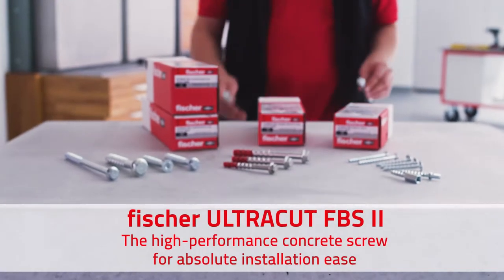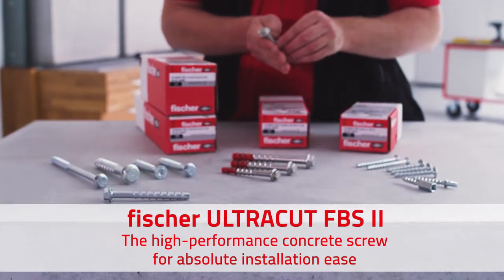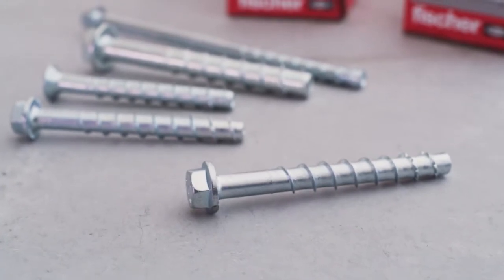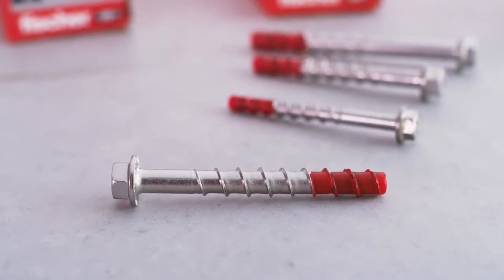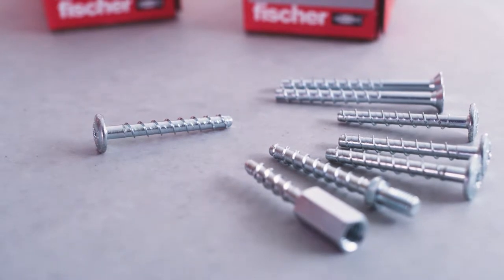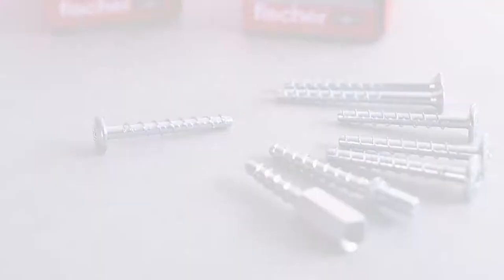Fischer Ultracut FBS2, the high-performance concrete screw for absolute installation ease. Zinc-plated steel with a diameter of A240 in A4, and for the sanitary, heating, and electrical industry out of zinc-plated steel with a diameter of 6 mm.